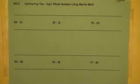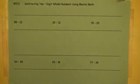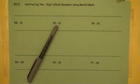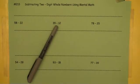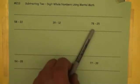So 58 minus 22 becomes 38, take away 2, which is 36. Then the next example: 39 minus 12. Again, we're going to use 39 minus 10 to take us down to 29, then take away two more to take us down to 27.